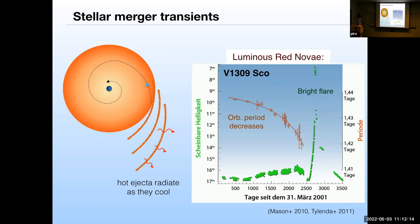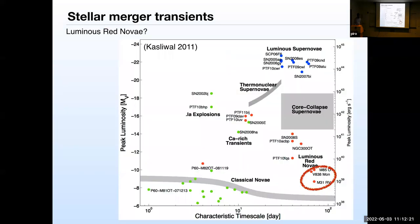That object ended up serving as a prototype for a class of objects which is now growing really rapidly — it's called the Luminous Red Novae. I looked it up and there was even a San Francisco garage band called the Luminous Red Novae, apparently with stickers. But as a class of astronomical objects, they're between classical novae and core-collapse supernovae in brightness, with similar durations of tens to hundreds of days.